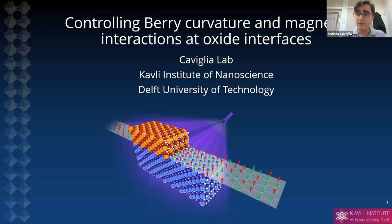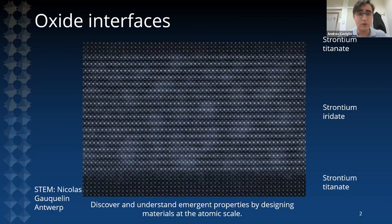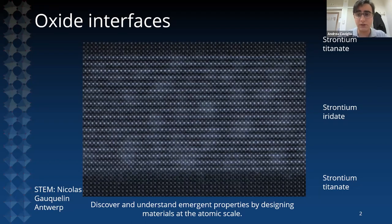Today I would like to talk about oxide interfaces, and the emphasis is going to be on the manipulation of Berry curvature and magnetic interactions in these systems. Let me start by telling you what I'm talking about here. This is an electron microscopy image of a sample made in Delft in our lab, one of these oxide interfaces that we study.